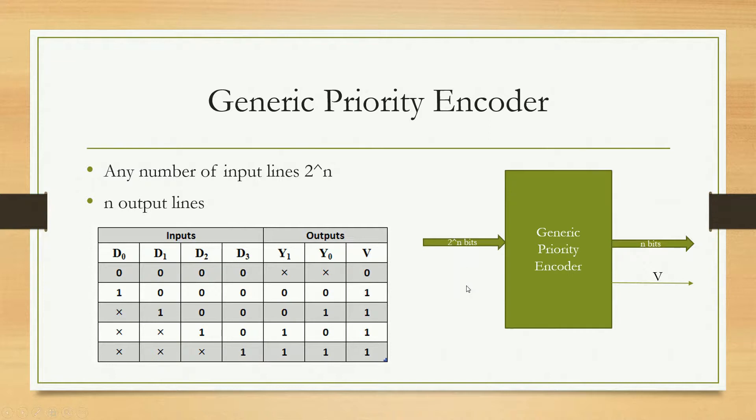Basically a priority encoder, all the inputs have a fixed priority, positional priority. Let's take an example. Suppose we have four bit input D0, D1, D2, D3, which is 2 raised to power 2. Now it will have two bits as an output, that is Y1 and Y0, along with the valid signal V.